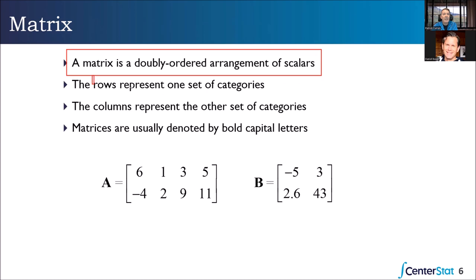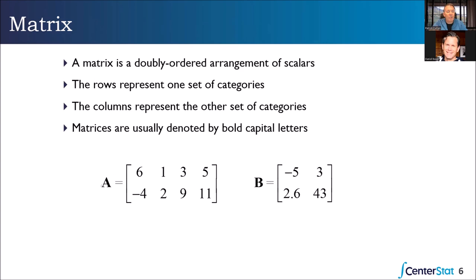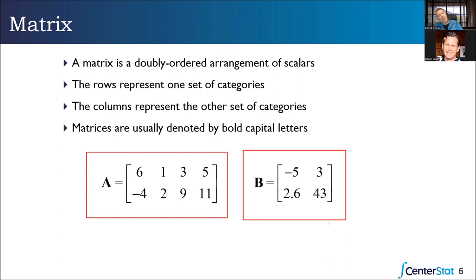We're going to snap our fingers and say: rows represent one set of categories, columns represent another. A matrix is denoted by a capital bold letter. Capital A bold, capital B bold — do you know why it's capital bold? Nobody does; we just all agreed on it. If I see a capital bold letter, I immediately know it's a matrix with multiple rows and multiple columns. So A we'll call a rectangular matrix because it has two rows and four columns; B we'll call a square matrix because it has the same number of rows as columns.